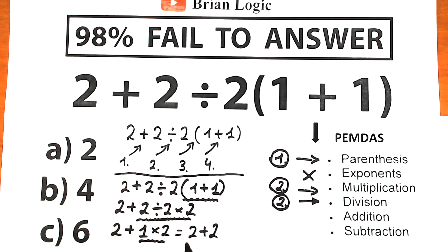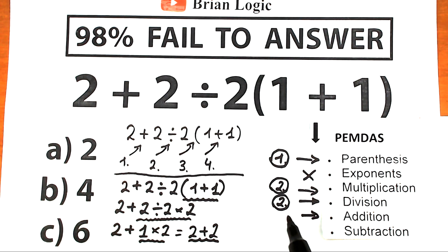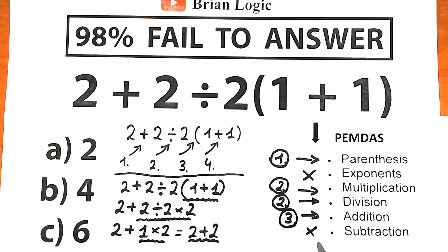The third step is basic addition. We have 2 plus 2, which equals 4. We don't have any subtraction, so we easily solve this addition part and get 4.